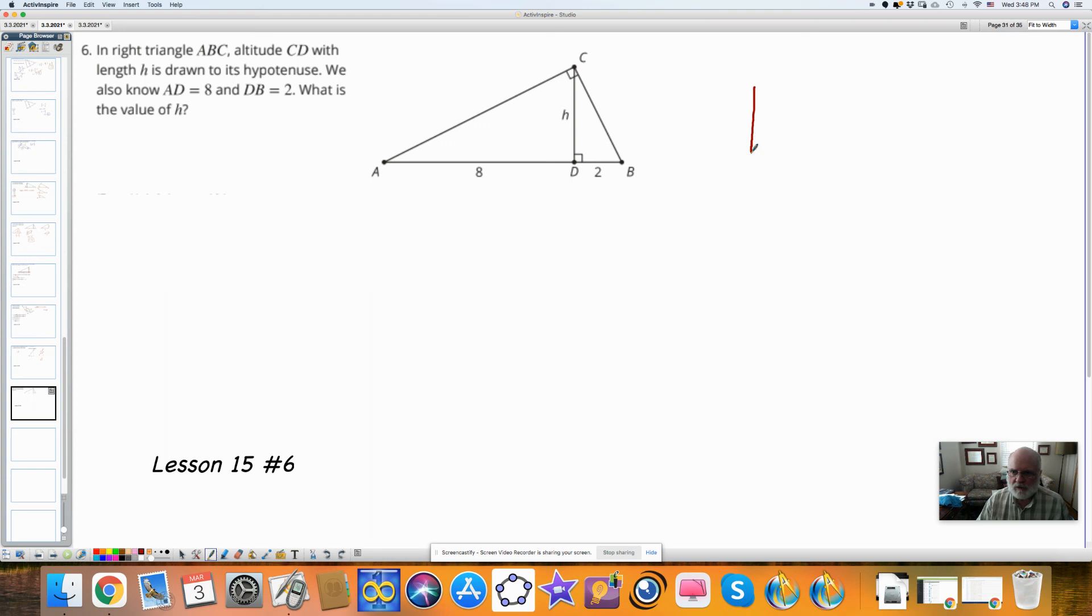I could break these into two similar triangles because I have this angle is congruent to this one. So the right angle in here. So I have 8 going to A, and this would be D and C. I could have C over here, D and B. This length is 2. And this is H, and this is H.